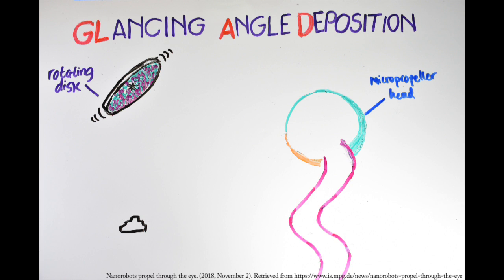To make the nanorobots move, they are put in a rotating magnetic field. The nickel or iron segment is attracted to the magnetic field and causes the micropropeller to rotate, and the helical tail keeps it moving forwards.